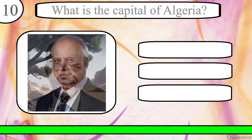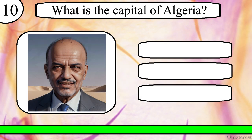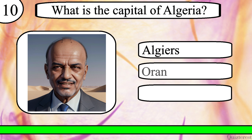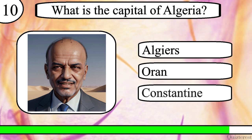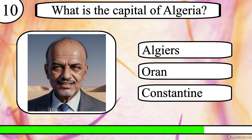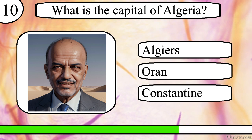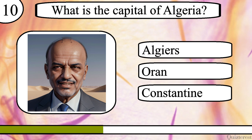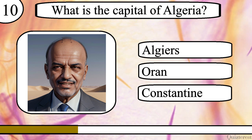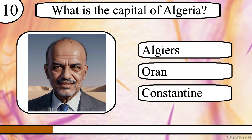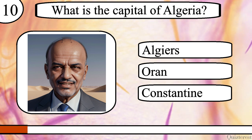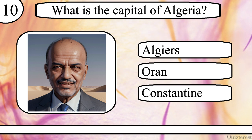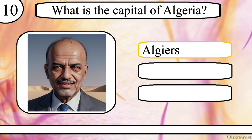Question 10. What is the capital of Algeria? Algiers, Oran, or Konstantin? The correct answer is Algiers.